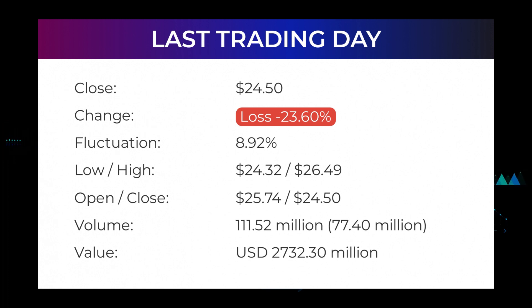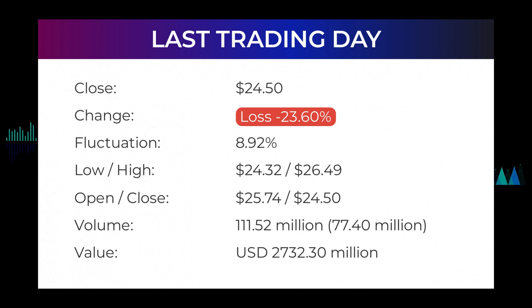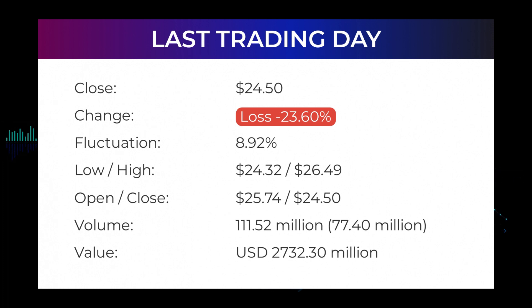During the day the stock fluctuated 8.92% from a day low at $24.32 to a day high of $26.49. The price has fallen in seven of the last 10 days and is down by minus 29.98% for this period. Volume increased on the last day by 77 million shares, but on falling prices this may be an early warning, and risk will be increased slightly over the next couple of days. In total, 112 million shares were bought and sold for approximately $2.73 billion. In the last 52 weeks, the highest price was $83.34 and the lowest was $24.32. The current price is 70.6%, or $58.84, below the 52-week high of $83.34, which is also the all-time high for the stock.